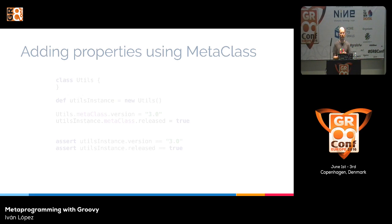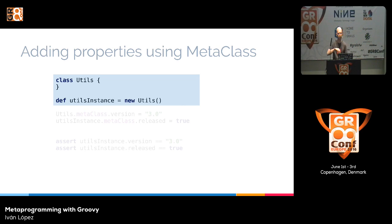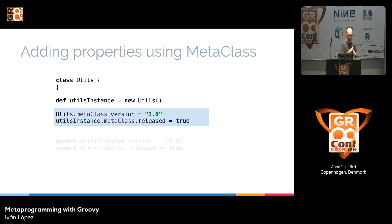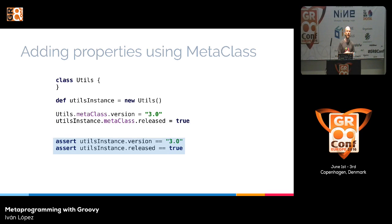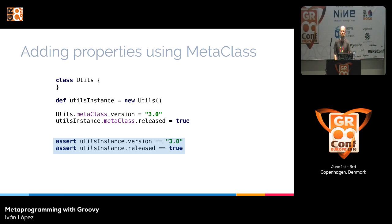We can also add new properties to the meta-class. Imagine we have an empty class. We can create a new instance, add a new property named 'version' to the class meta-class, and also add a new property to the instance. Now the instance has both properties available — it doesn't matter if we created the instance first and then modified the meta-class. The instance now has those properties.